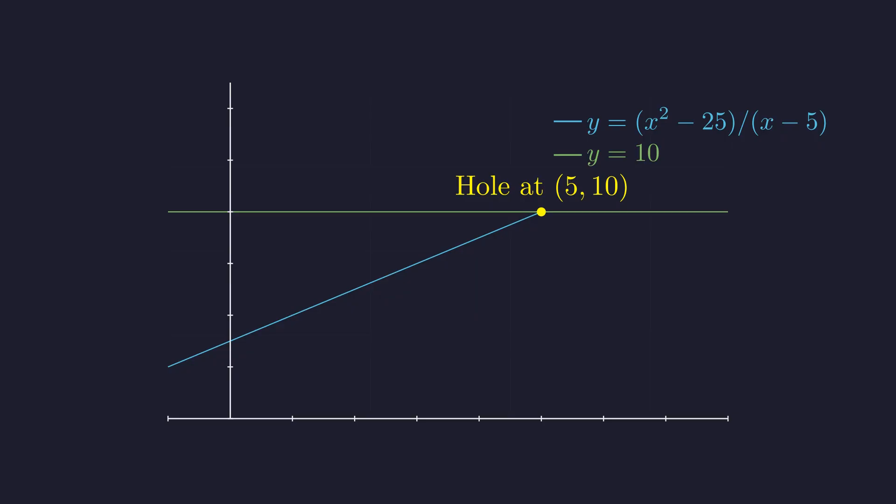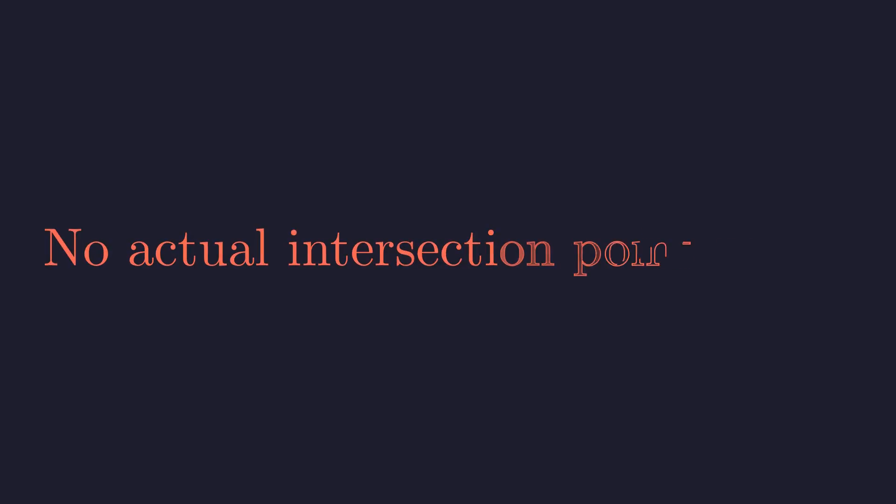The function doesn't exist at that point. It looks like the lines should intersect at 5 comma 10, but that hole means there's no actual intersection. No intersection means no solution. The graph perfectly illustrates why this equation has no answer. The would-be solution point simply doesn't exist.